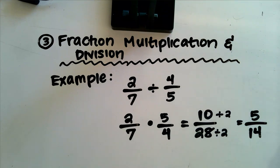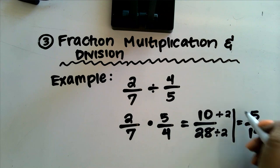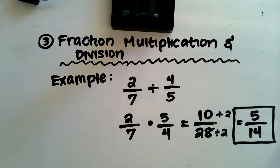I know that I can't go any further here because there's no common multiples besides 1 that go into both 5 and 14. So I know that I am done, and that my result of 2 over 7 divided by 4 over 5 is equal to 5 over 14.